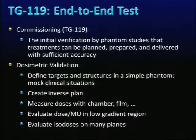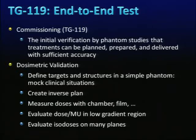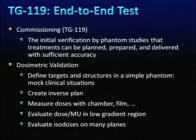Moving to the end-to-end test: once basic MLC and VMAT testing is done, you test under real conditions. TG-119 recommends dosimetry validation by defining test targets and structures, creating mock clinical cases, making inverse plans, measuring dose with chamber, film, or other devices, and evaluating dose per MU in high- and low-gradient areas, as well as isodose in multiple planes.